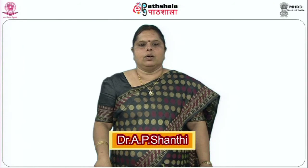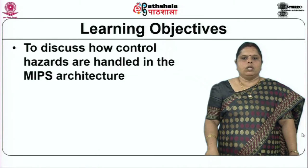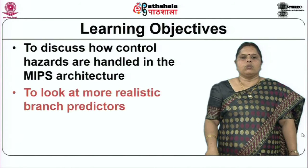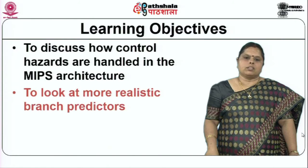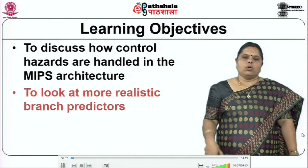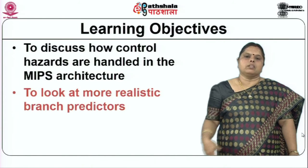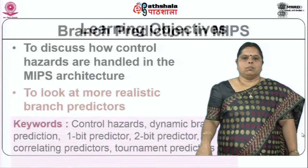Welcome to the ePath Shala Lecture Series in Computer Science. We are discussing the course Computer Architecture. This module is about Dynamic Branch Prediction. The objectives of this module are to discuss how control hazards are handled in the MIPS architecture and to look at more realistic branch predictors. The previous module looked at static prediction; this module concentrates on dynamic branch predictors and their variations.